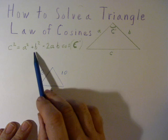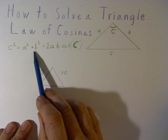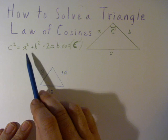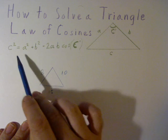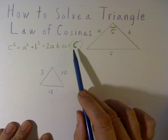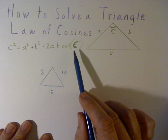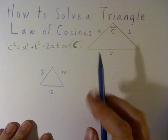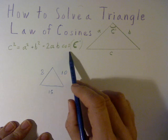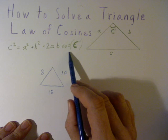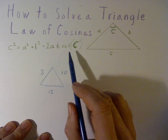You'll notice that the law of cosines looks a lot like the Pythagorean Theorem. In fact, this is a more generalized version of the same theorem. This works with triangles that are not right triangles.